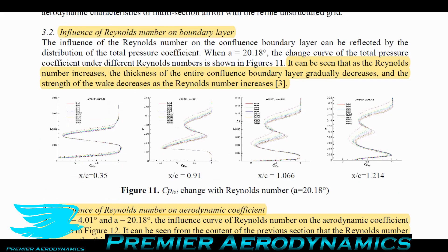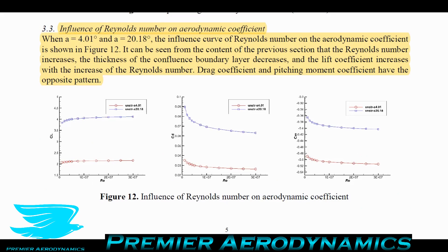They then discuss the influence of Reynolds number on aerodynamic coefficients. Figure 12 plots the lift, drag, and moment coefficients against Reynolds number at two angles of attack: 4.01 degrees and 20.18 degrees. For the higher angle of attack, as Reynolds number increases from about 1 million to 30 million, the lift coefficient increases significantly — from roughly 3.8 up to above 4.0, about a 10% increase.